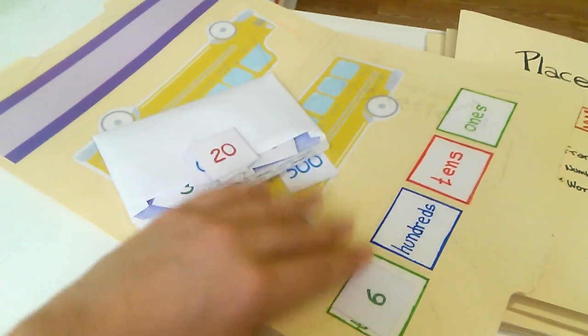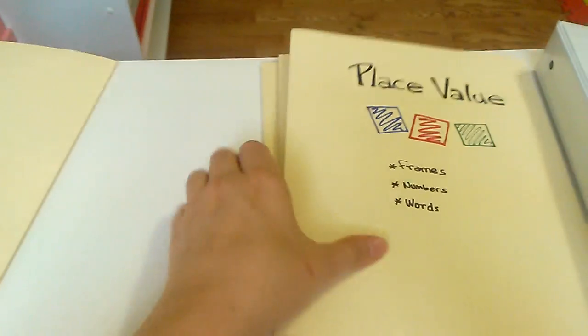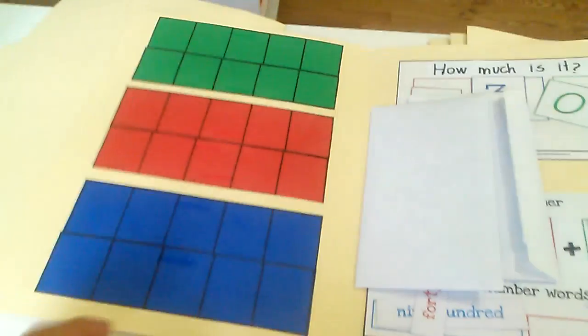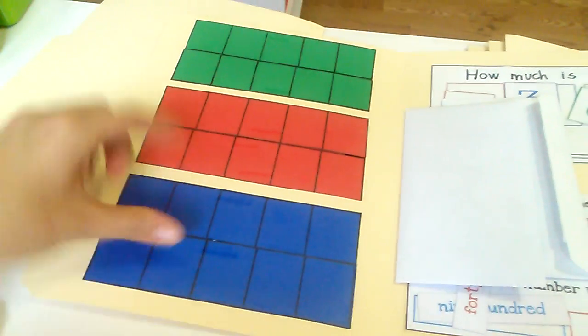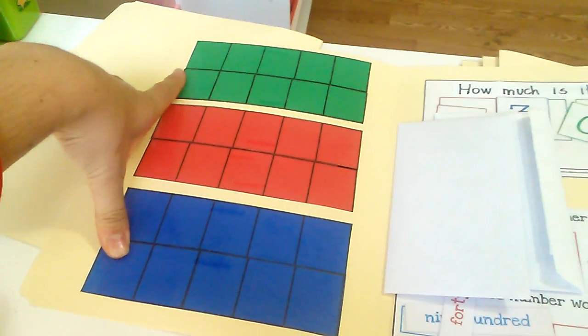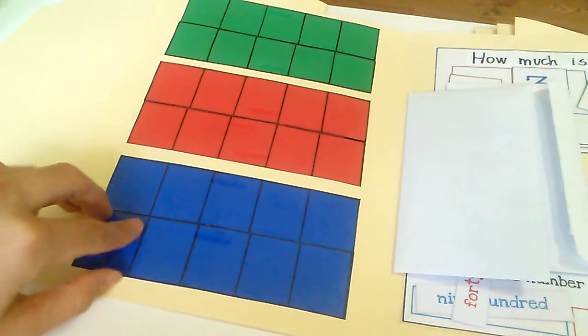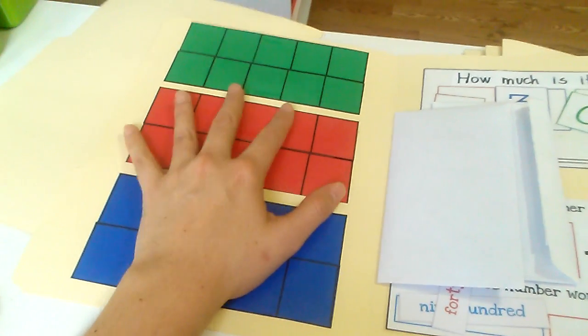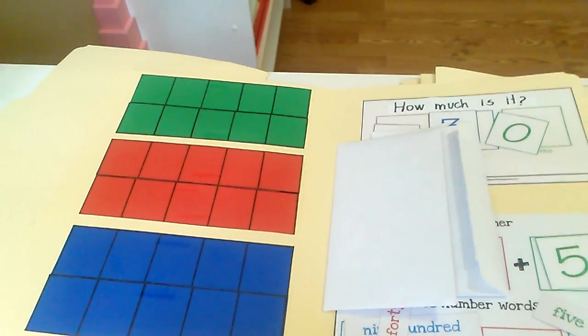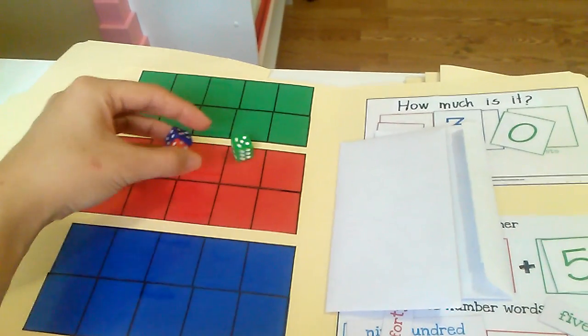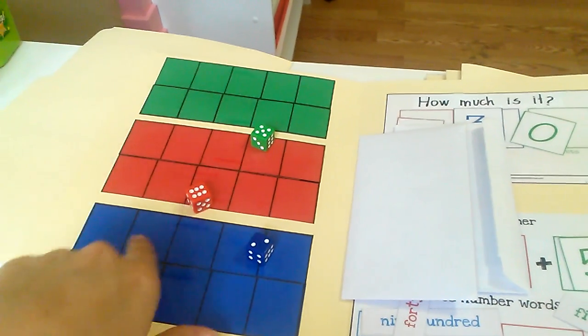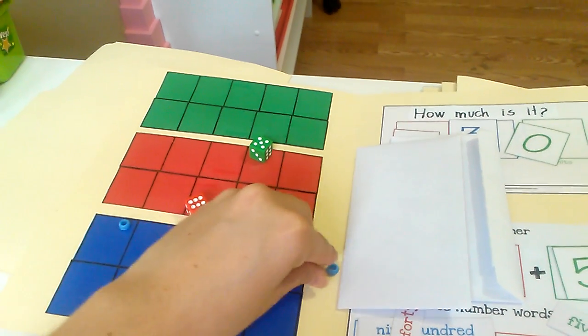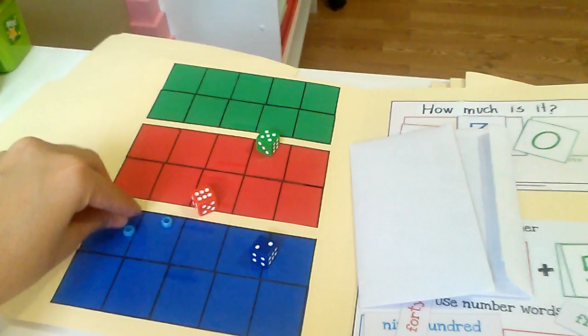In this one I made these three ten frames out of cardstock, marker, and packing tape. And you can play with these by itself. You can roll a dice for each color and whatever number it lands on you can put some counters or anything like little bears, buttons, whatever you want to use.